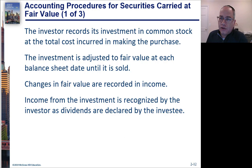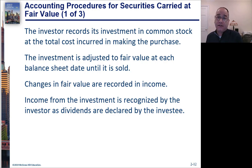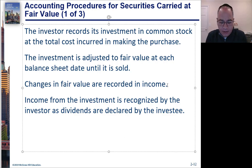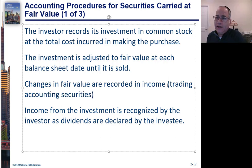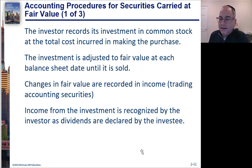For trading account securities, gains and losses go to income. But for held-for-sale securities, which are more long-term, gains or losses go to other comprehensive income instead — think of it like a shoebox. The gains or losses sit there and wait until you sell the investment, at which point they come out of the shoebox and flow into income and retained earnings. Changes in fair value go to income for trading securities and to OCI for held-for-sale securities.